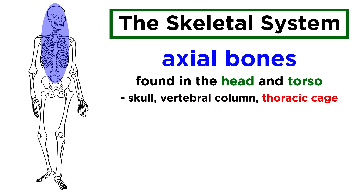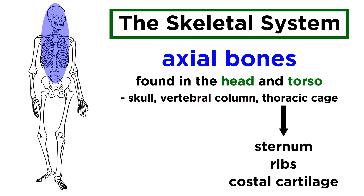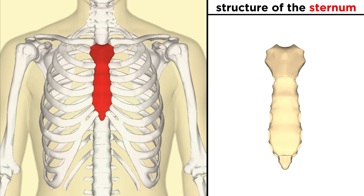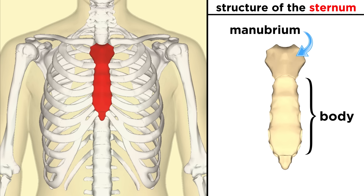The last part of the axial skeleton is the thoracic cage. This is essentially comprised of the sternum and the ribs, as well as a lot of costal cartilage. The sternum is a flat bone right in the middle of the thorax, and it is made from three smaller bones that have fused together. From top to bottom, these are the manubrium, the body, and the xiphoid process.